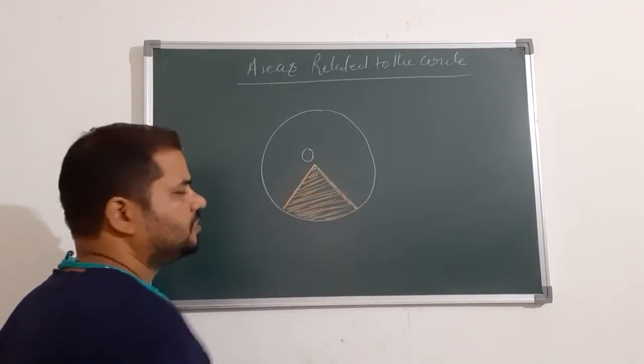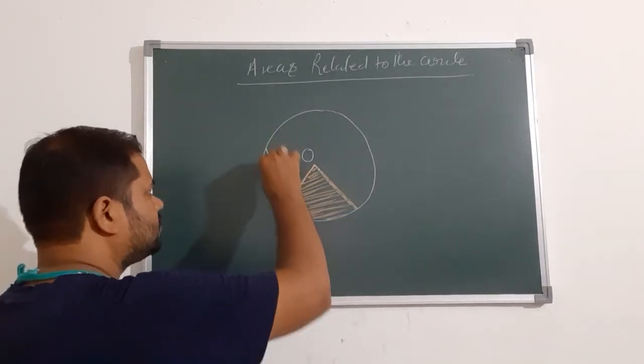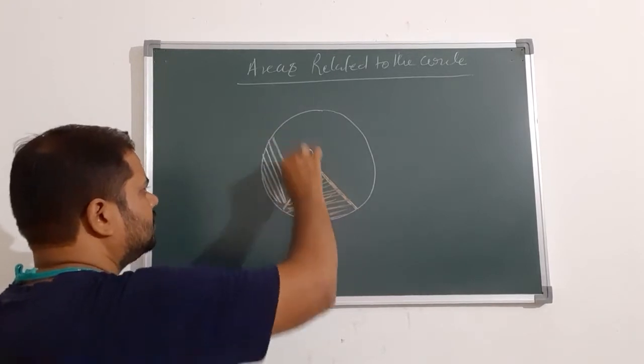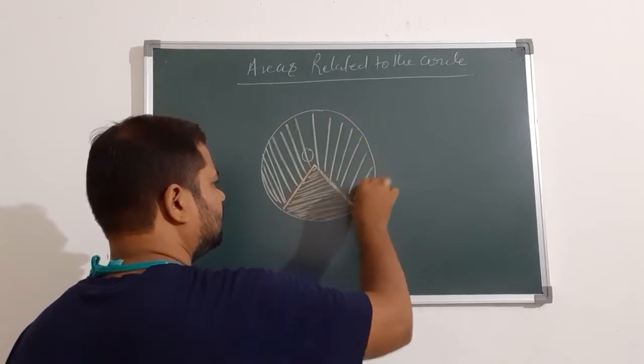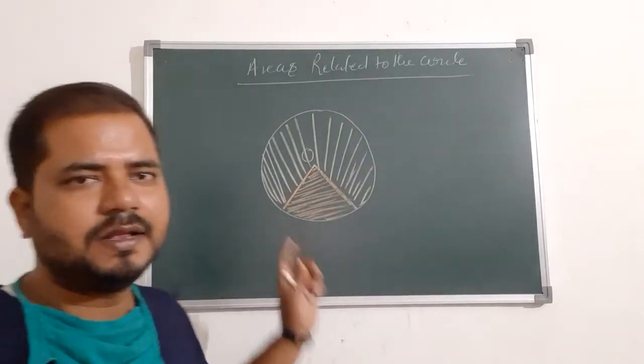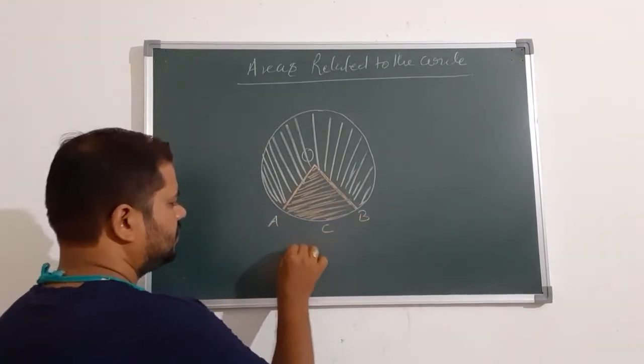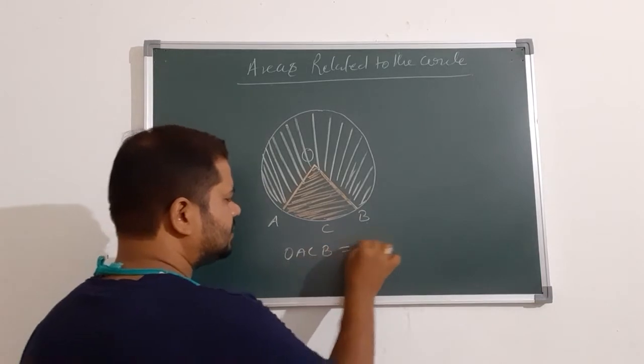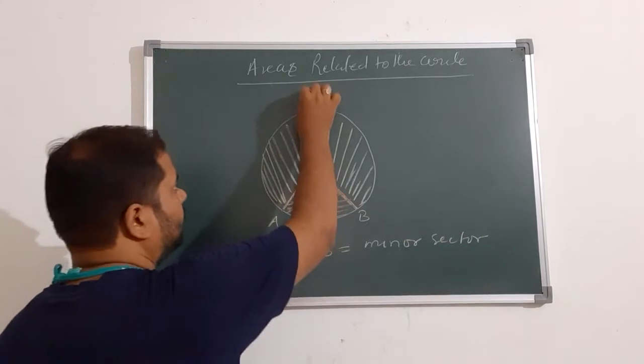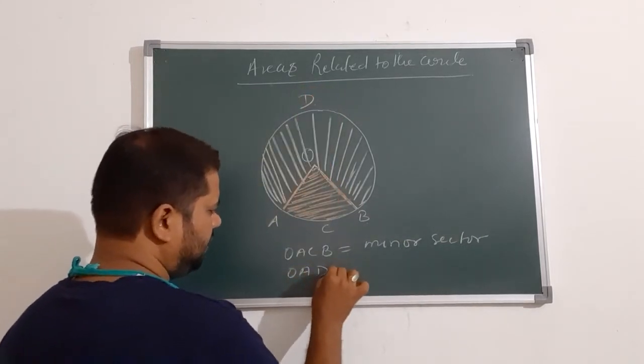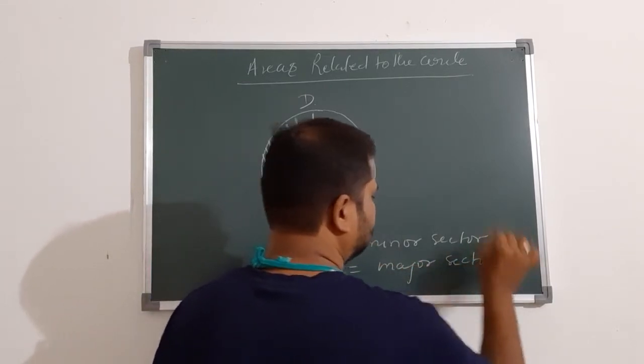The other is the minor sector and the remaining part is also a sector but it is major sector. The red one is the minor sector. OACP is minor sector and OACP is major sector.